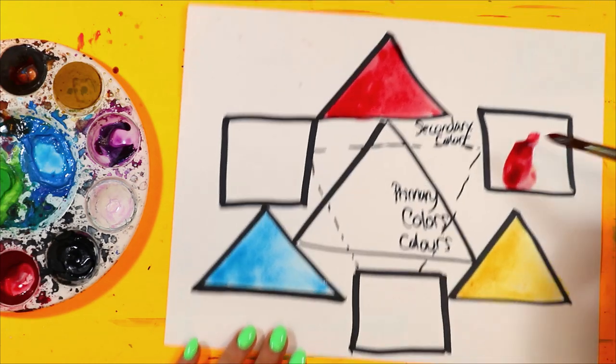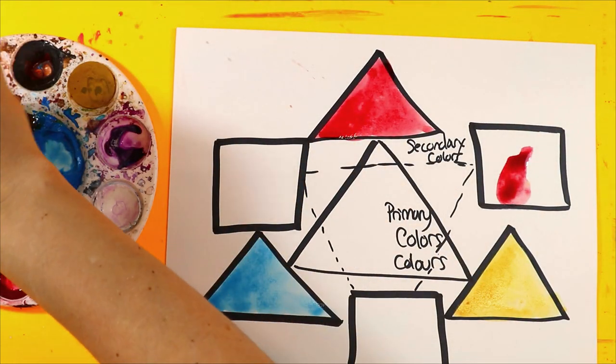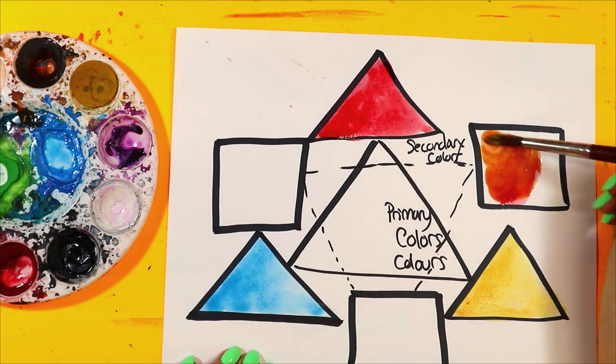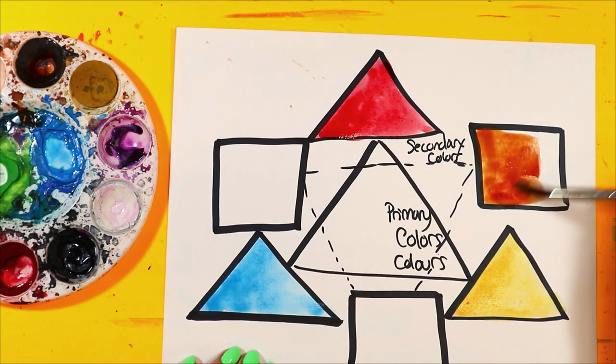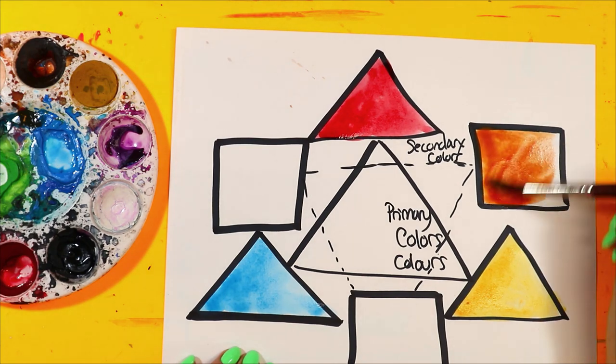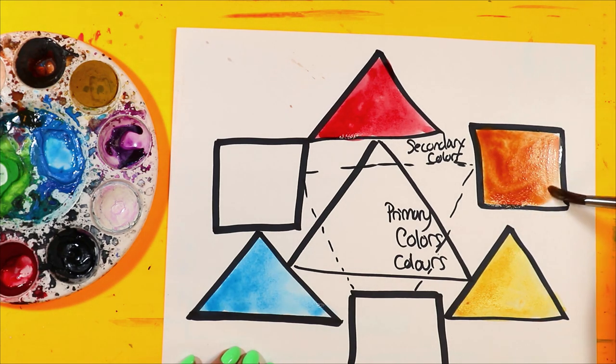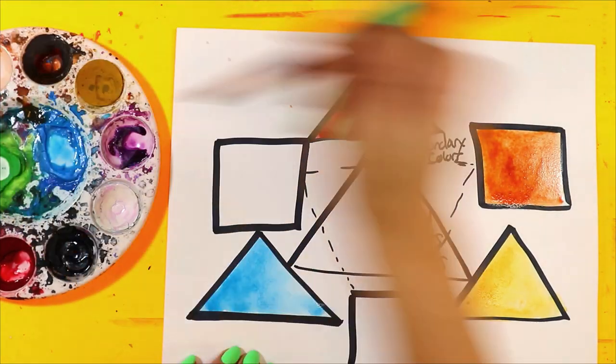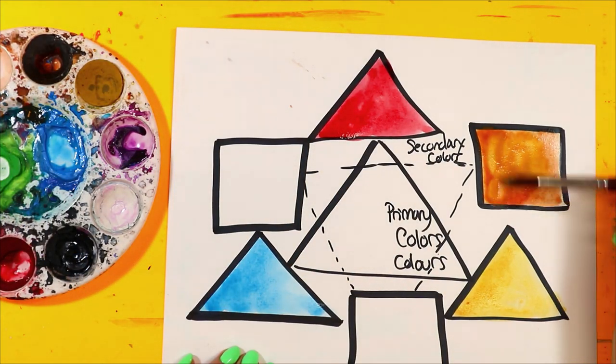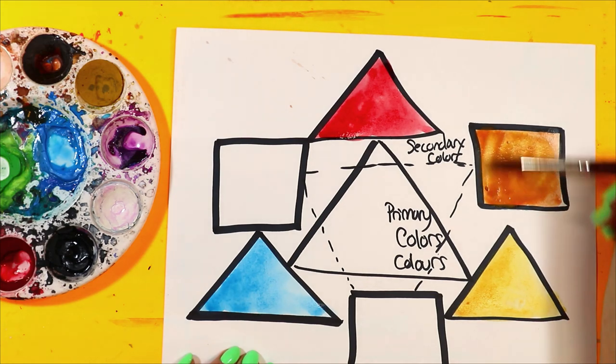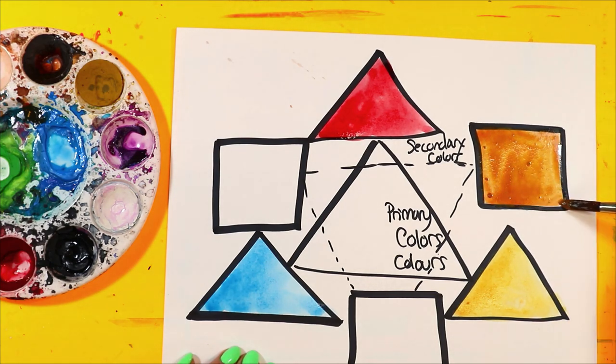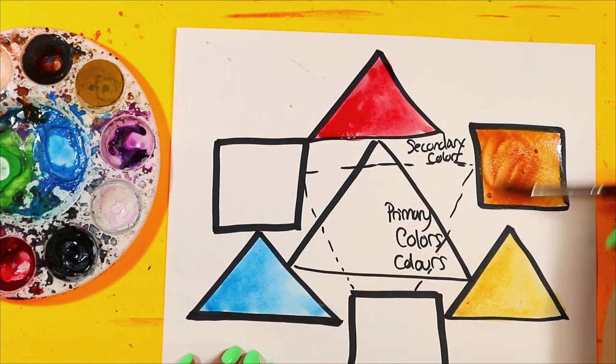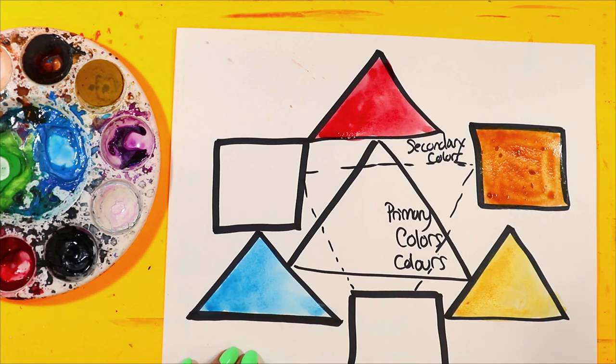Now we gotta mix it. Now it's really easy. I want to mix two triangles into a square. Two triangles into a square. Two triangles into a square. So I'm going to take red and yellow. Very first one, red, and I'm going to get my yellow. I'm going to mix it right on the paper and guess what my first secondary color is? Orange. Orange. Now this is a bit of a red orange. That means there's more red than yellow. So I'm going to get a little bit more yellow and that will make it more of a yellow orange. That's how we can change our colors.